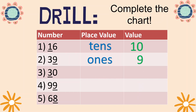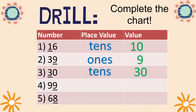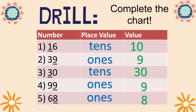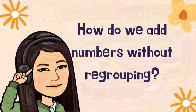How about number 3? Three tens, value 30 — three tens is 30. Number 4: nine ones, the value is nine. And for number 5: ones, the value is eight. Very good, children.